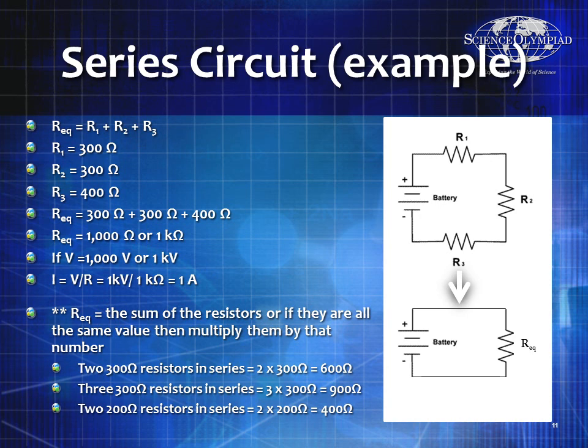Let's go through an example. R equivalent equals R1 plus R2 plus R3. If R1 is 300 ohms, R2 is 300 ohms, and R3 is 400 ohms, then R equivalent is 300 plus 300 plus 400, or 1,000 ohms — which we write as 1 kilohm. If I had a 1,000-volt battery (1 kilovolt), then I equals V divided by R, which equals 1 amp — actually quite a lot of power.